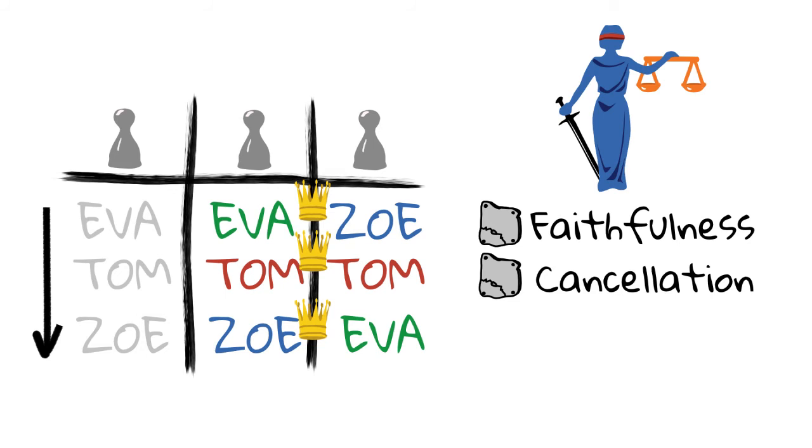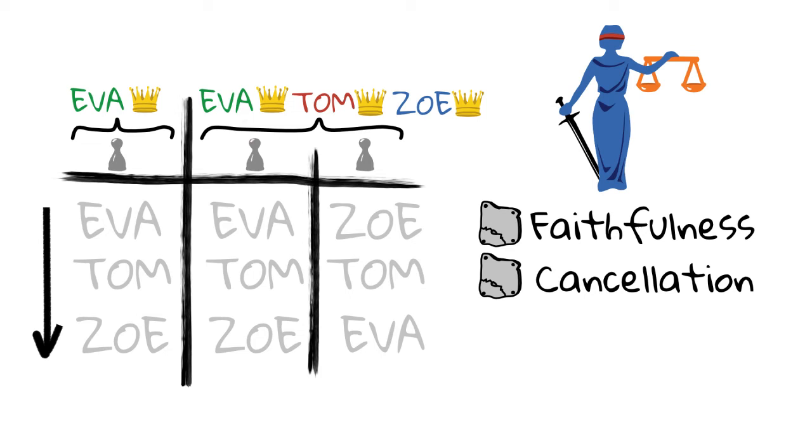Finally, we put these two groups of voters together. Eva is the only one who appears as a winner in both groups. According to the reinforcement axiom, Eva should win the election.